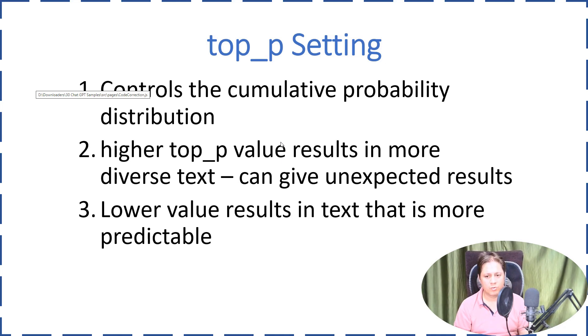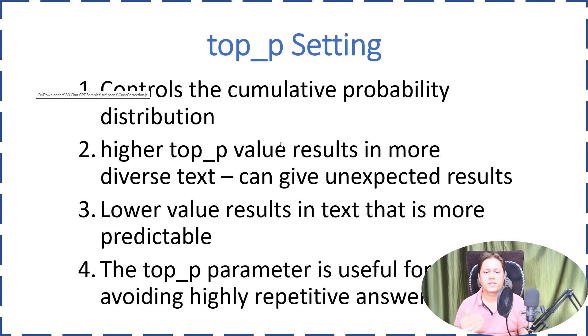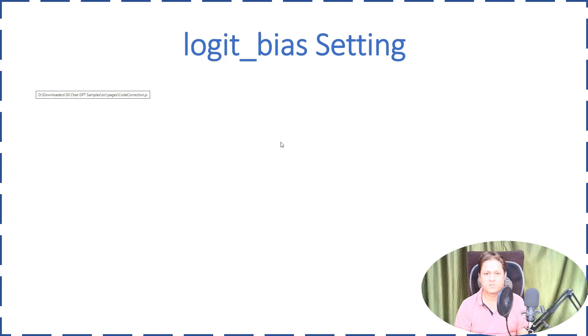If it is a lower value, you can predict and it can give you similar kind of results almost. Look at the fourth point. The top_p parameter is useful for avoiding highly repetitive answers. So if you don't want repetitive answers, you can use this parameter very effectively. This is what I want to say.